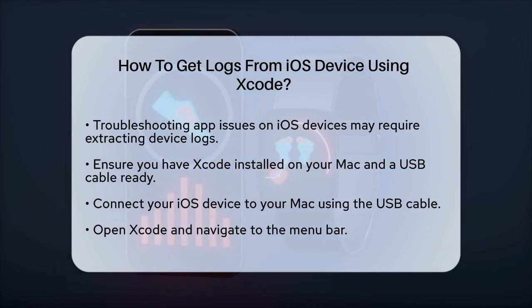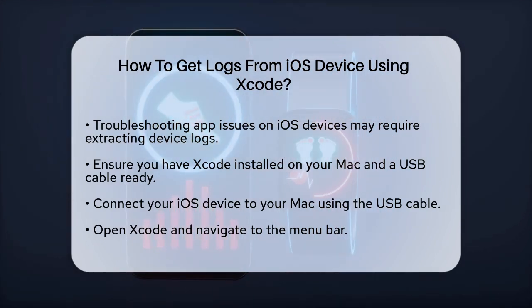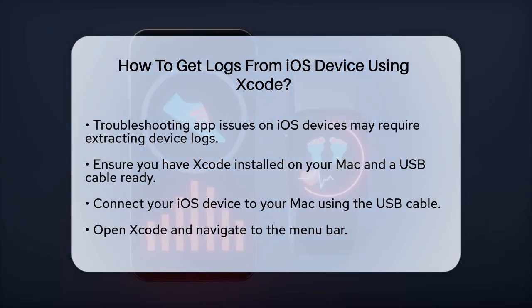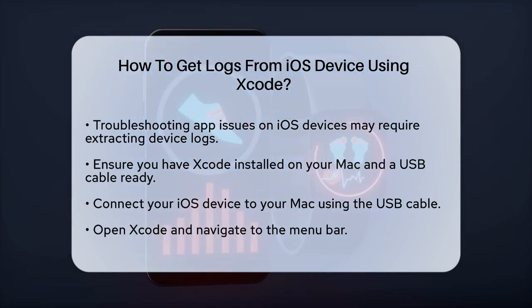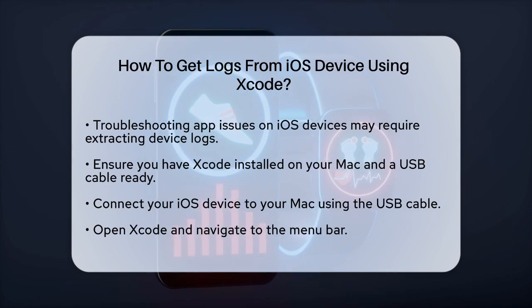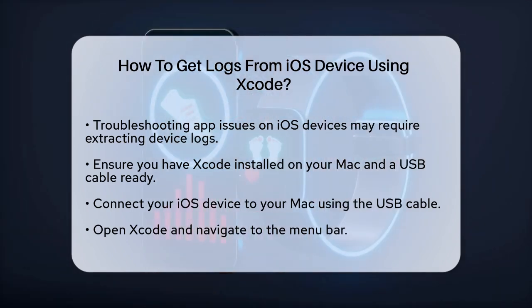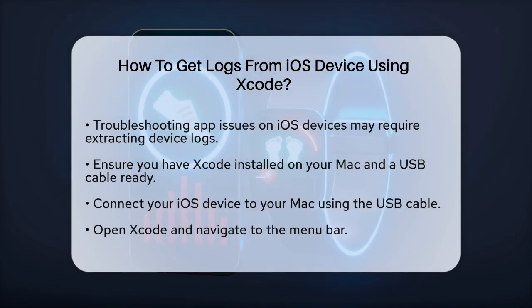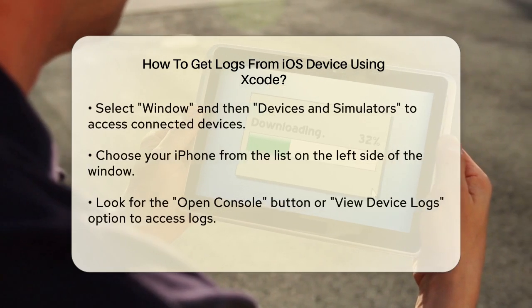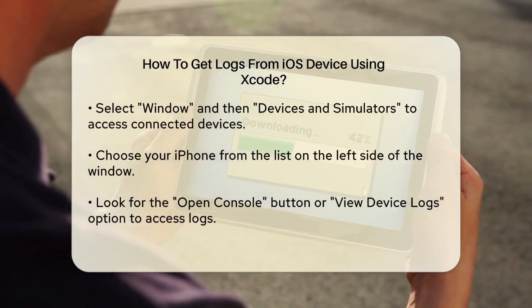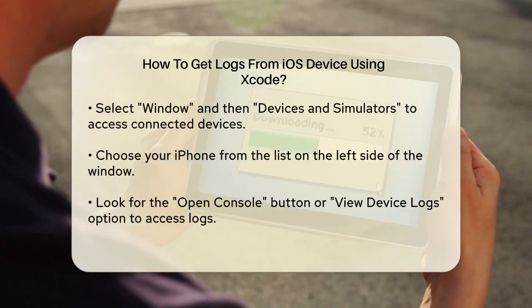Connect your iOS device to your Mac using the USB cable. Open Xcode on your Mac and go to the menu bar. Select Window and then Devices and Simulators. This will open a new window where you can see all connected devices.